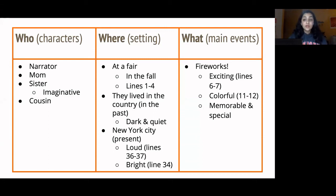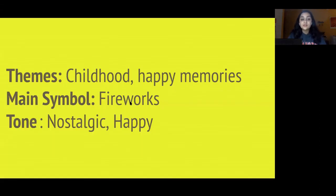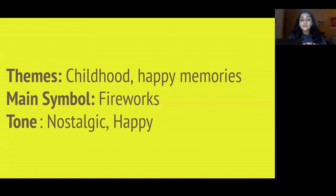We've filled out the chart with the main Who, What, and Where. Now before we wrap up, let's talk quickly about themes, symbols, and tone. The overall themes of this poem are childhood and happy memories — that's what the whole poem is built around. The main symbol is the fireworks, which is also the main piece of text evidence for those themes. For tone, I chose nostalgic and happy because the narrator is thinking back to good memories. That's pretty much it — it wasn't that hard.